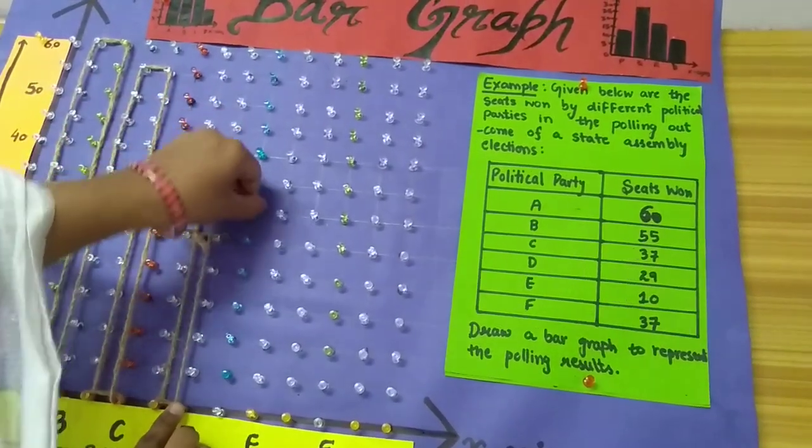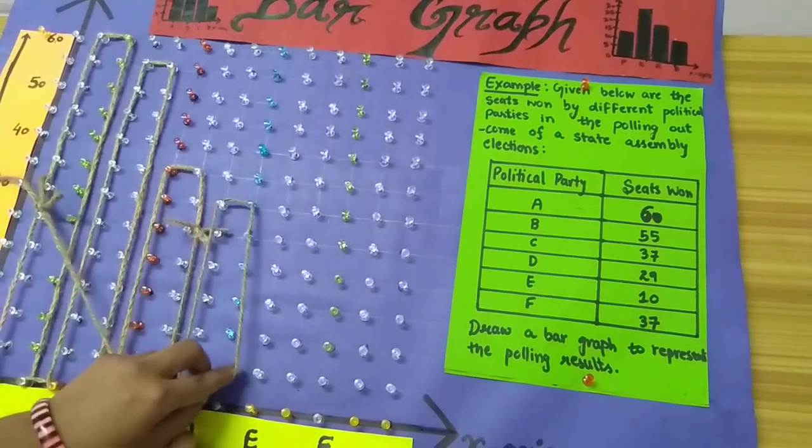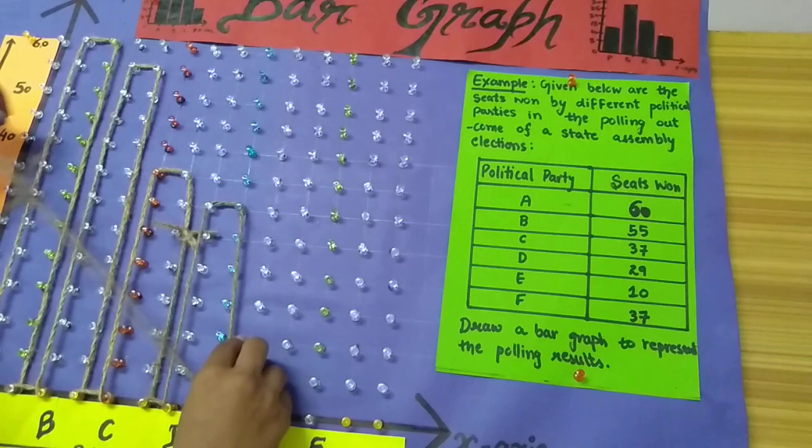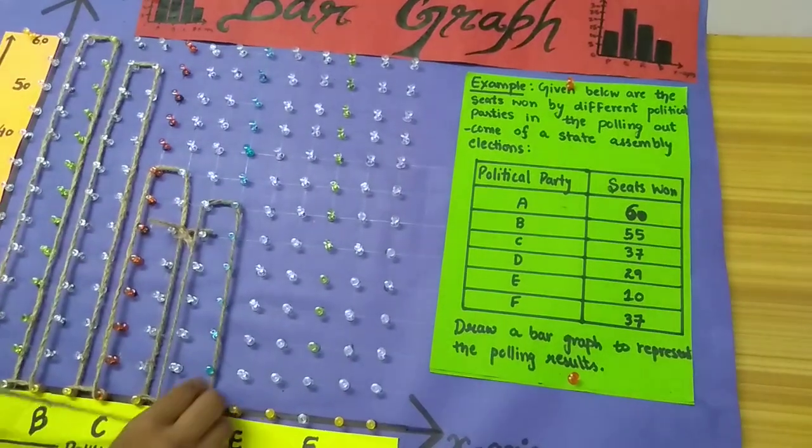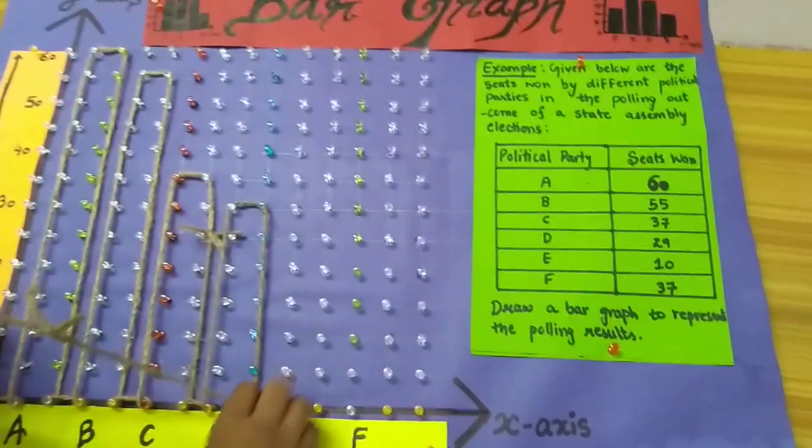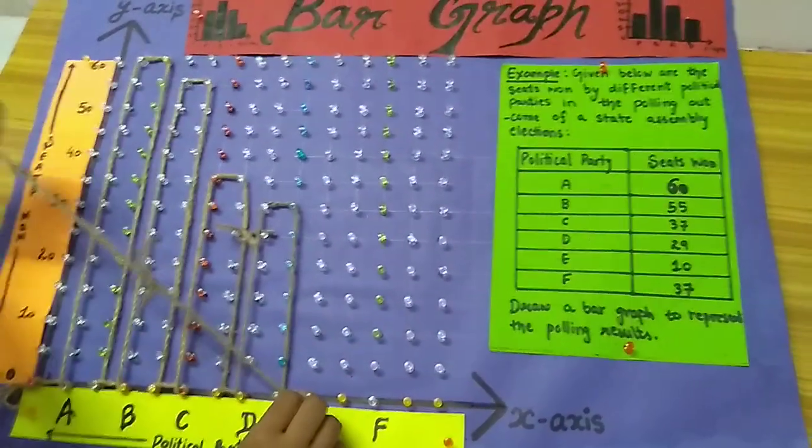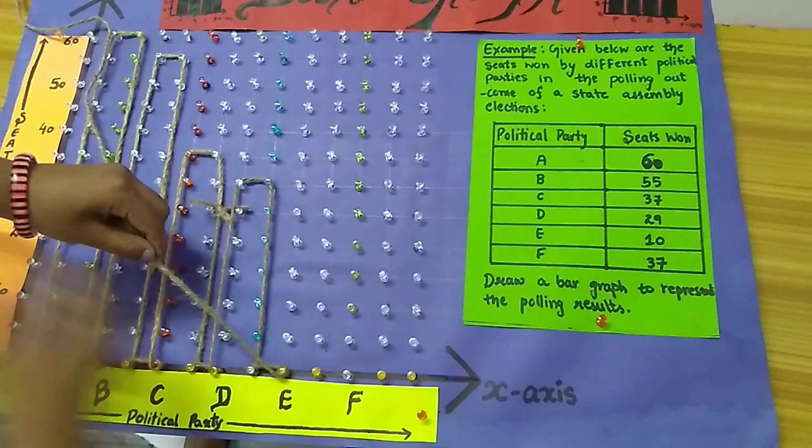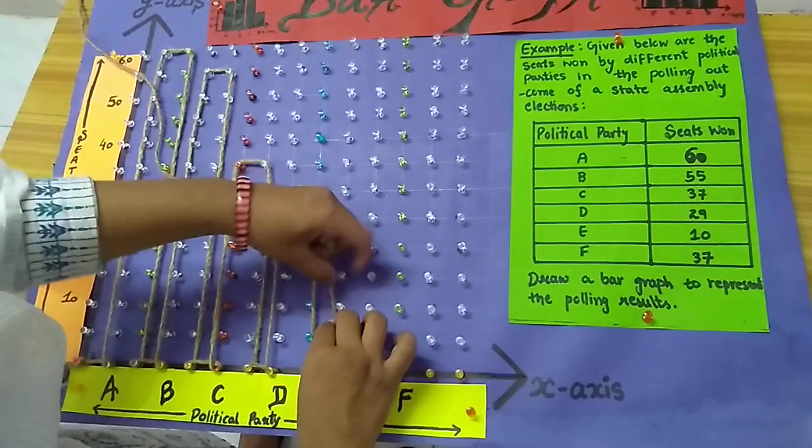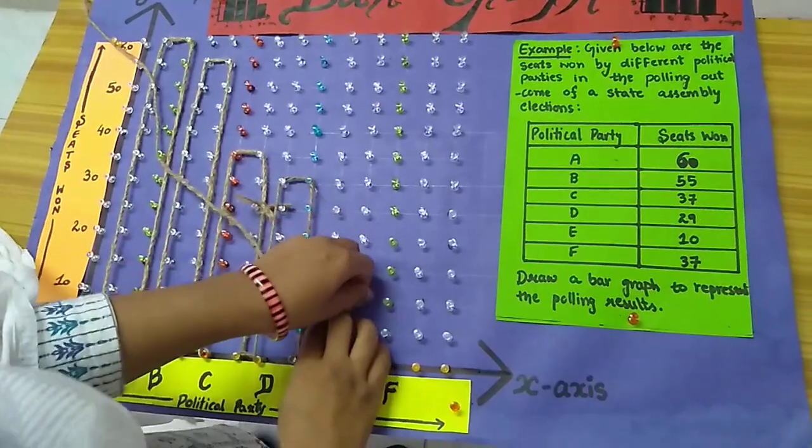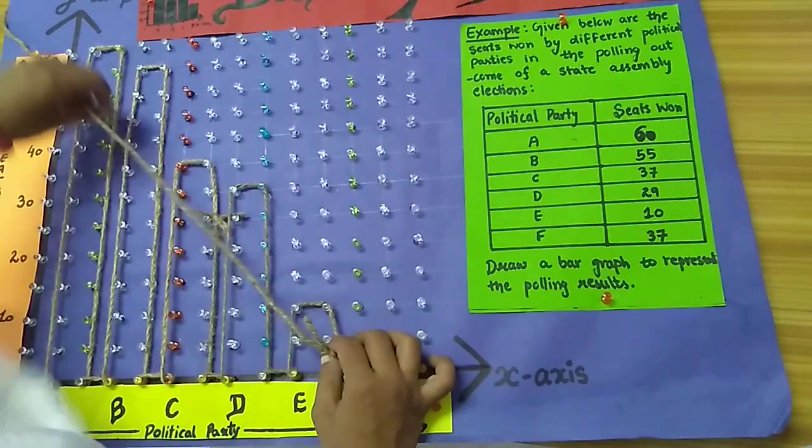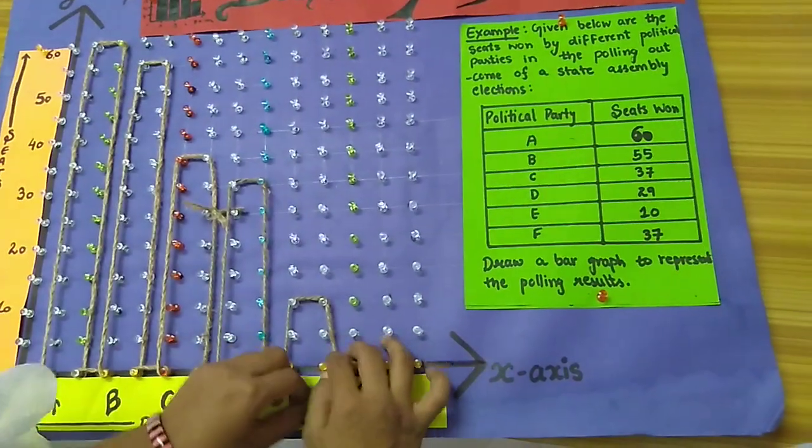For political party E, I have only 10 seats, and 10 is here. So I'll end it up nearby my origin. Here I'll roll my rope so that my rope doesn't get loose.